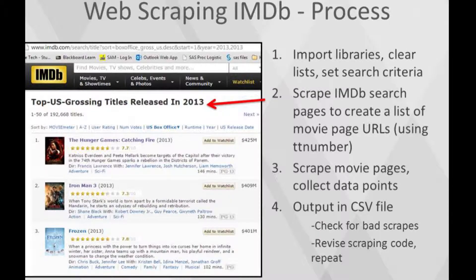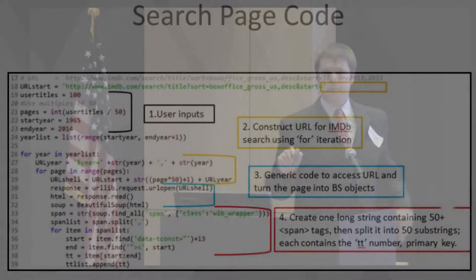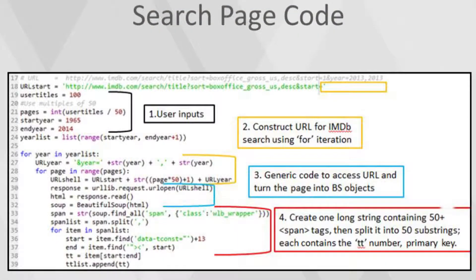Here's a look at the process. The first part is just clearing out your libraries. This is part two — it's the actual search page. Then we'll look at the actual movie pages that I scraped, and finally the output.